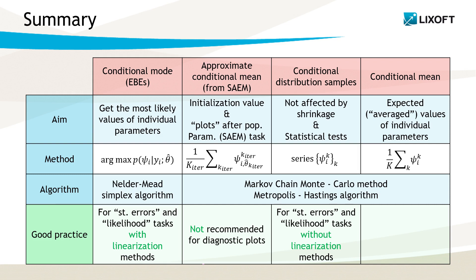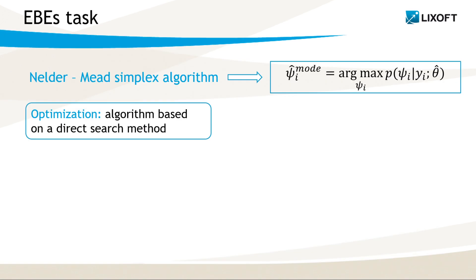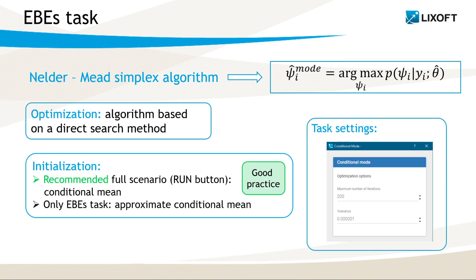Now let's look at these algorithms in more detail. The Nelder-Mead algorithm is an optimization procedure based on a direct search method. If we run a full scenario — that is, we click the Run button in the task section in the Monolix interface with both tasks selected, EBEs and conditional distribution — then Monolix first estimates the conditional distribution and then uses the conditional mean as the initial value in the EBEs task. This is the reason why we recommend running the full scenario.